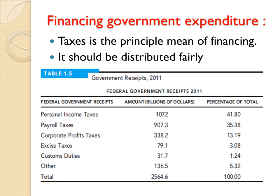The second part of the balance sheet concerns how we finance these government expenditures. Taxes are the main tool and principal means for financing government expenditures. Taxes should be distributed fairly among citizens. In this table, we see federal government revenues in 2011 by tax category. The highest percentage of revenue comes from personal income taxes.